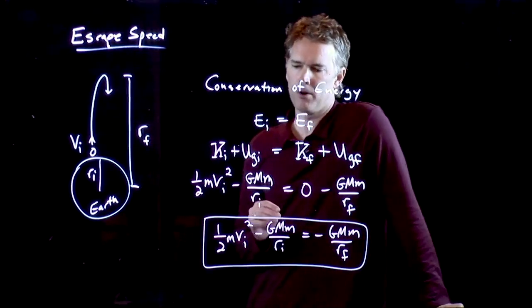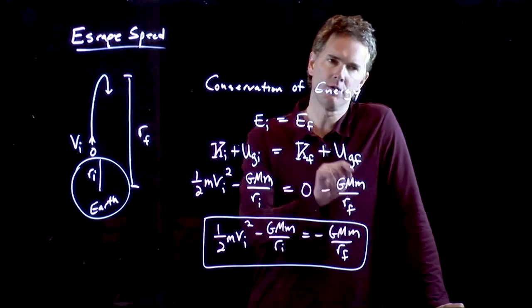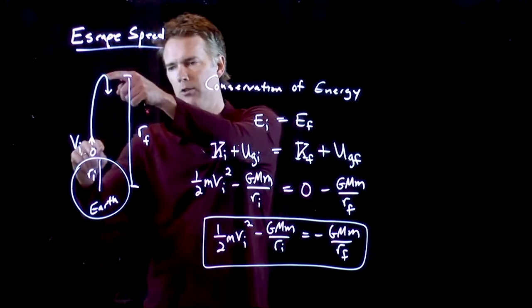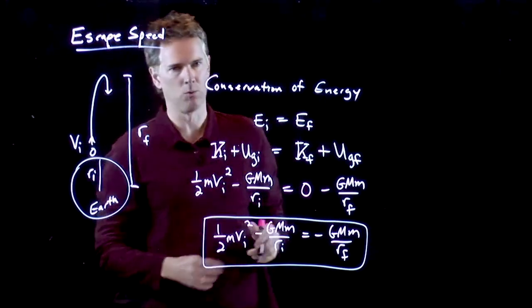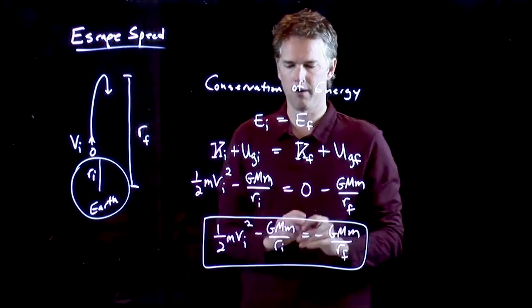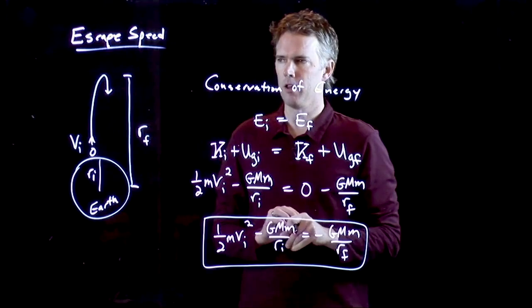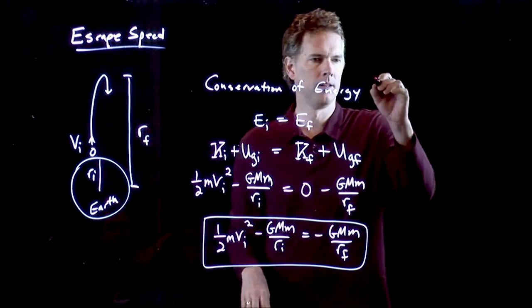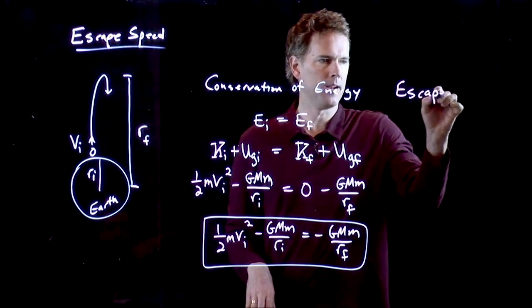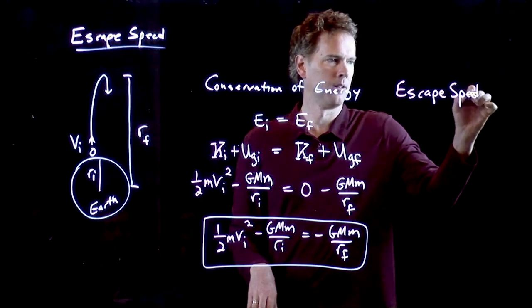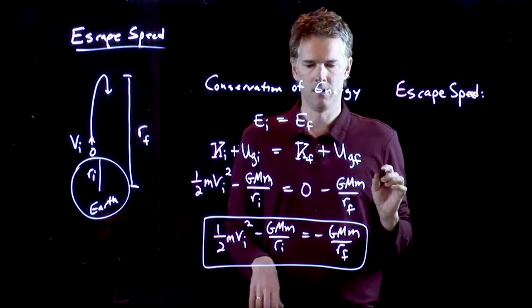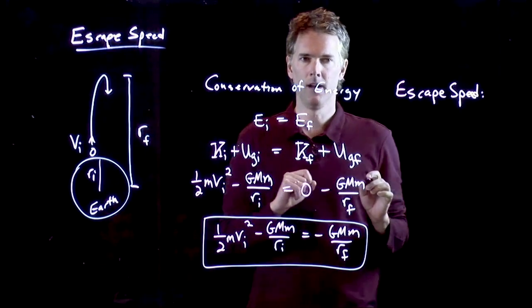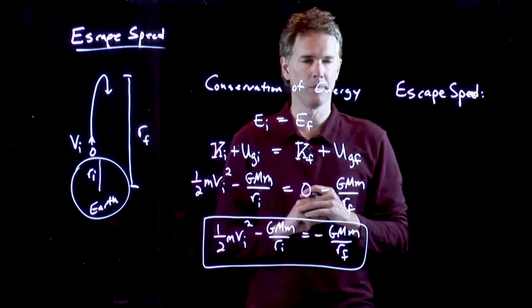The important thing to remember is R is measured from the center of the earth. So if you want to calculate the altitude when you're all done, you have to subtract the radius of the earth. So just be a little bit careful about that. Let's say I do the following. Let's say I throw that object up so high that it never ever comes back. If I do that, what does RF become? Matt, what should I set RF equal to if the thing just keeps going out away from us forever?